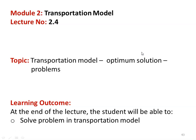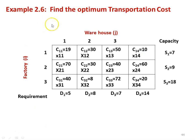In the earlier lecture we discussed one problem on the optimization technique. Here we use another example to understand the methodology of calculating the optimum solution for the transportation model. The learning outcome is that the student will be able to solve problems in the transportation model. We take example 2.6 to find the optimum transportation cost of the problem between supplying from factory to the warehouse.